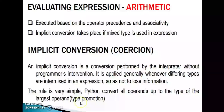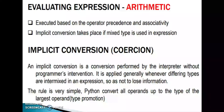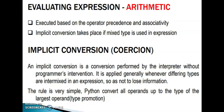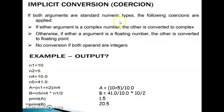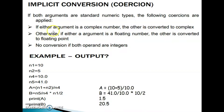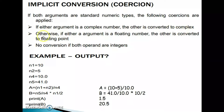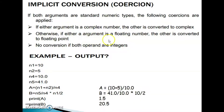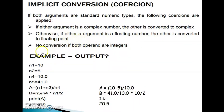This is called type promotion. Python automatically converts to the largest operand type, which is known as implicit conversion or coercion. If both arguments are standard numeric types, the following coercions are applied: if either argument is a complex number, the other is converted to complex; if either argument is a floating number, the other is converted to float. No conversion occurs if both operands are integers.